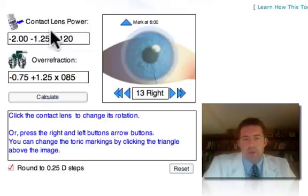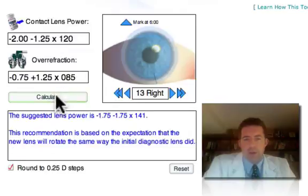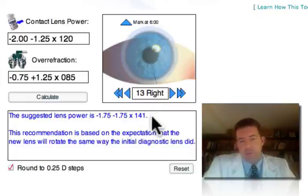So once you input these three pieces of information, hit calculate, and it'll show you the results of a cross-cylinder calculation. And in this case, I would use minus 1.75 minus 1.75 axis, I would choose 140 since contacts don't usually come in 141. And I'd order this trial lens and try it on the patient's eye. Cross my fingers and hope that this would be the lens for this patient.